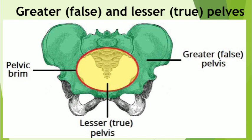The greater pelvis — shown in green — is also called the false pelvis, while the lesser pelvis — shown in yellow — is also called the true pelvis. The pelvis is divided into greater and lesser pelvis by an oblique plane of the pelvic inlet, also called the superior pelvic aperture. The pelvic inlet has a bony edge — the pelvic brim — which is a rim surrounding and defining the pelvic inlet.